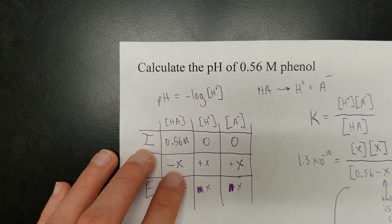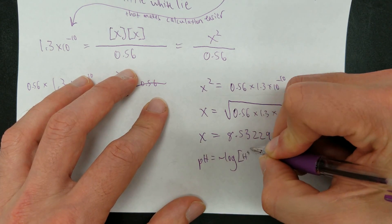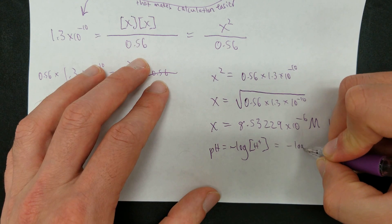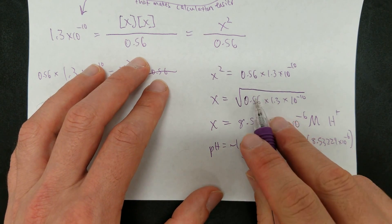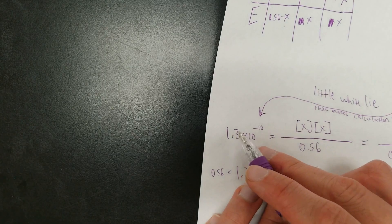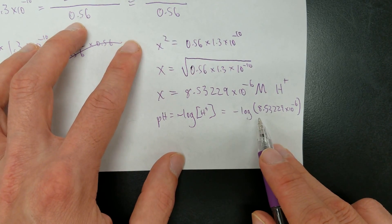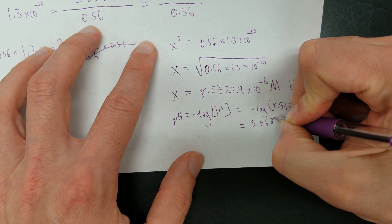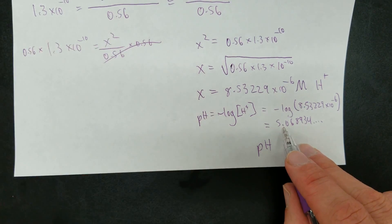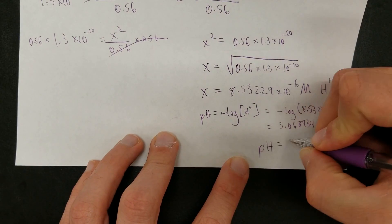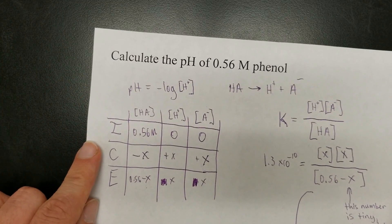But that's not the final answer — the question asked us to calculate the pH, not the hydrogen ion concentration. Remember that pH equals the negative log of hydrogen ion concentration. We take the negative log of 8.53229×10⁻⁶, which gives 5.068934... When we round to two significant figures — on account of the Ka value from the chart having only two sig figs — the answer is 5.1. That's how we calculate the pH of a weak acid.